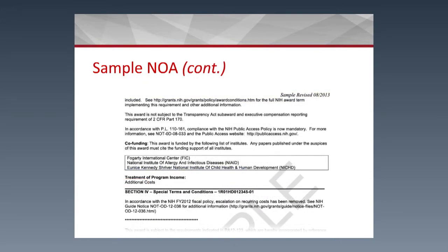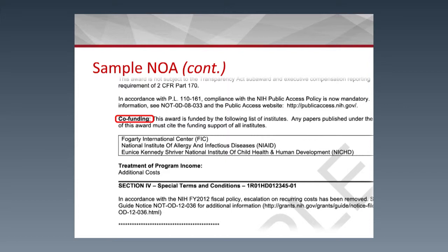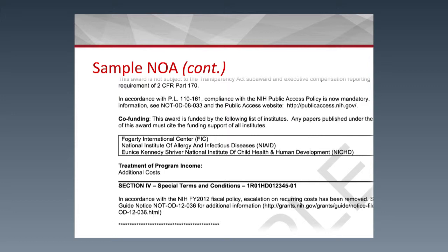Section 3 will also indicate if there is any co-funding, showing the names of institutes funding the project — in this example, HD (NICHD) and AI (Allergy and Infectious Diseases). Co-funding is used when a grant is of interest to other institutes. For example, the Institute of Allergy and Infectious Diseases is interested in the research being conducted and decided to put additional funds in. This page reflects their name so they can get credit and so you know who is contributing to your research.